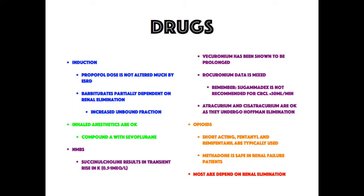For neuromuscular blockers, succinylcholine causes a transient rise in potassium of 0.5 to 1 mEq/L. Vecuronium has been shown to have a prolonged effect in renal failure. The data on rocuronium is mixed. Sugammadex is not recommended for creatinine clearance less than 30 mL/min, and is a reduced recommendation above that threshold in renal failure. Atracurium and cisatracurium are safe in renal failure as they undergo Hofmann elimination.